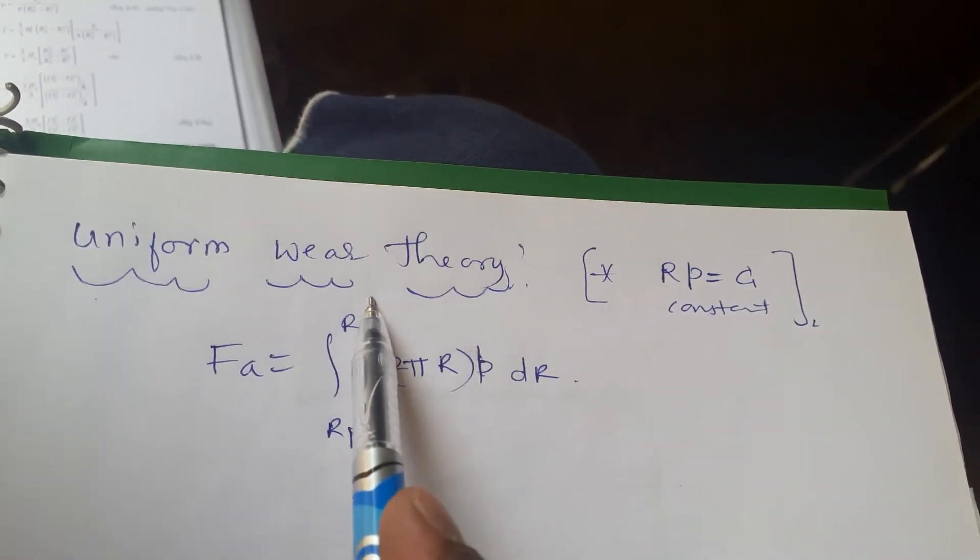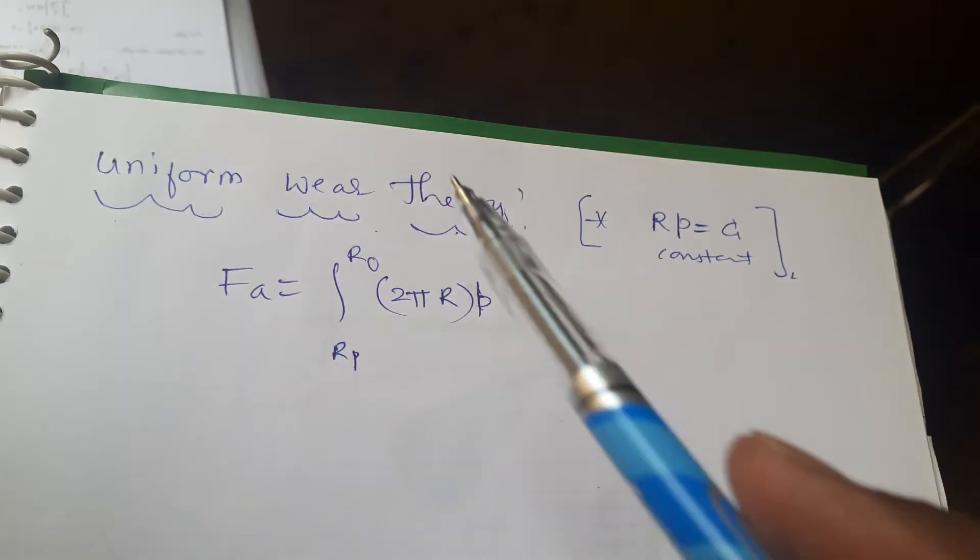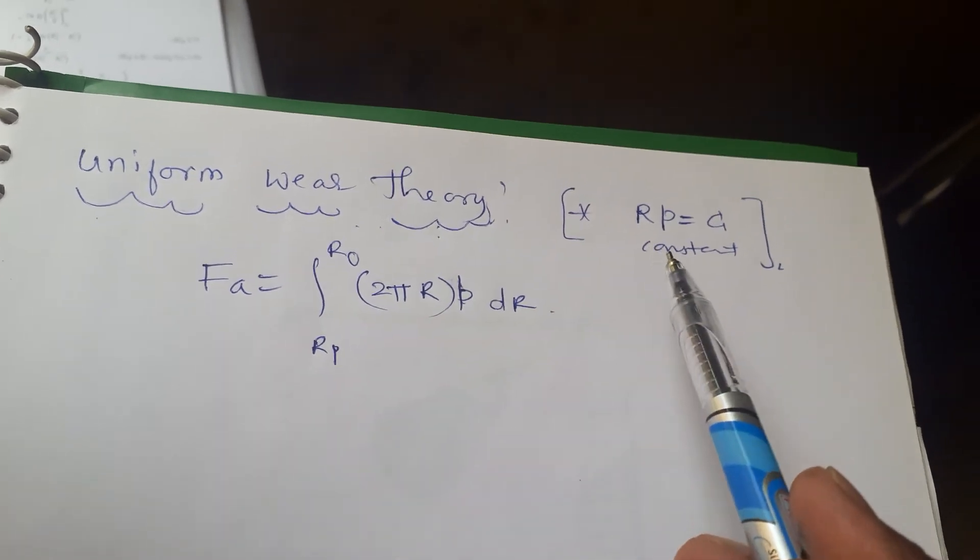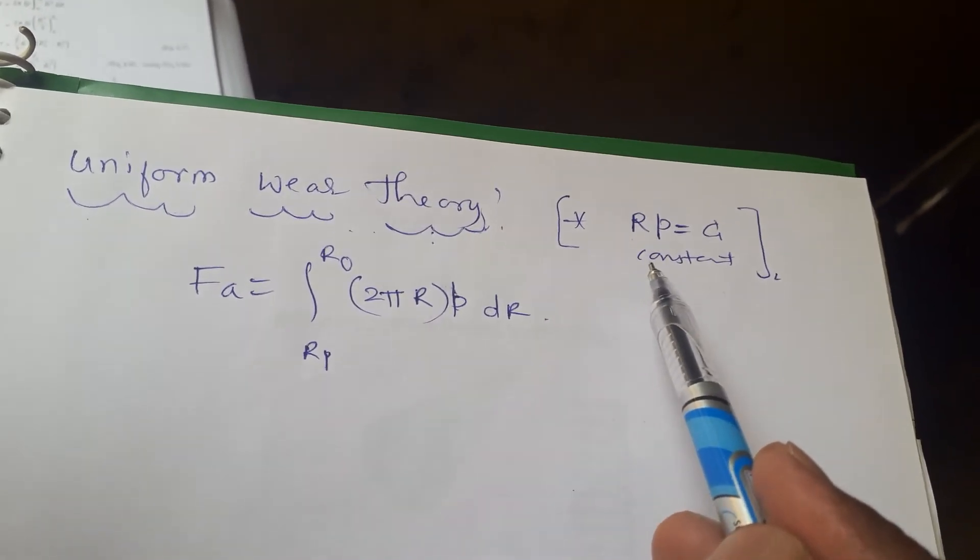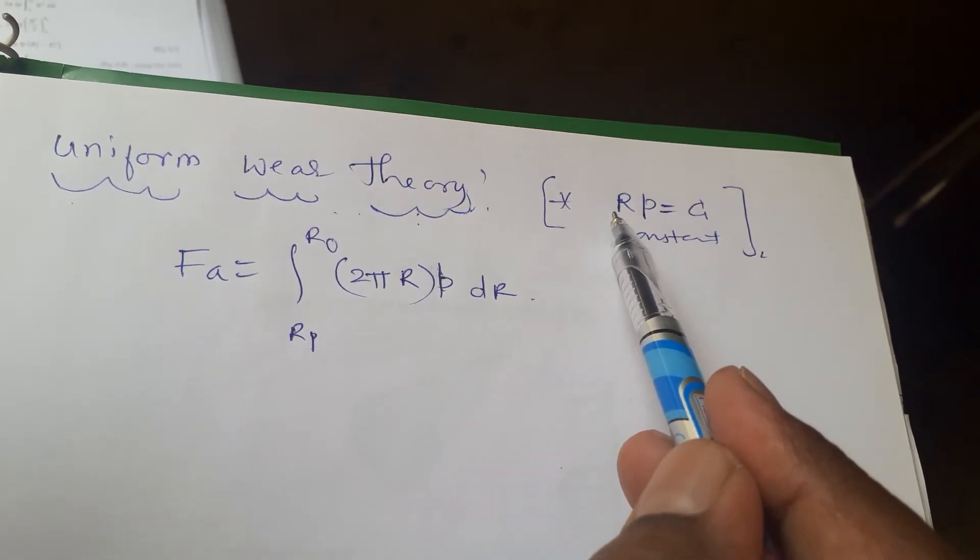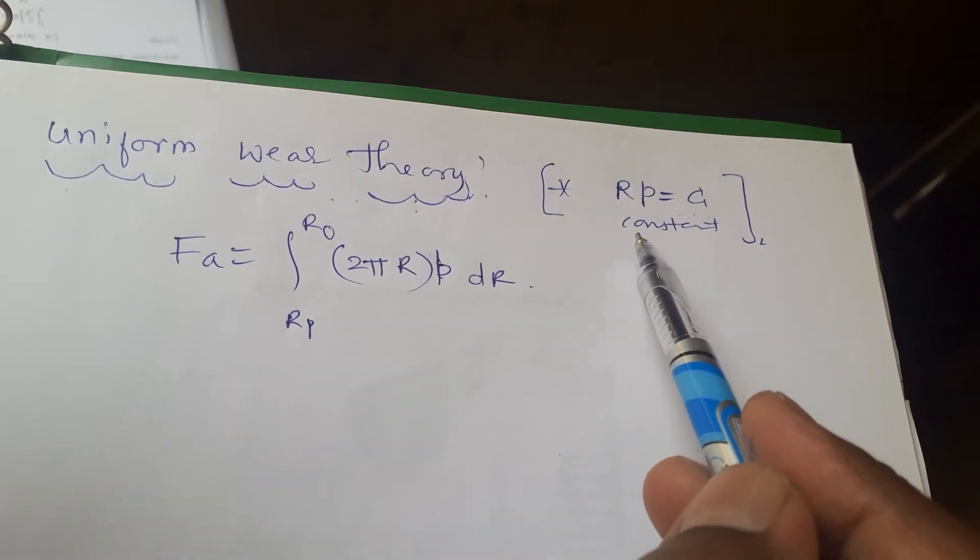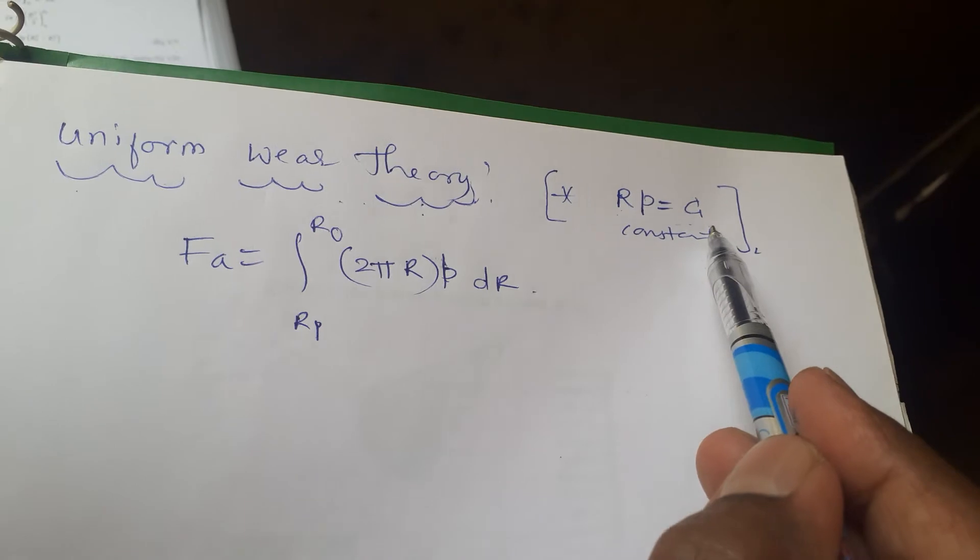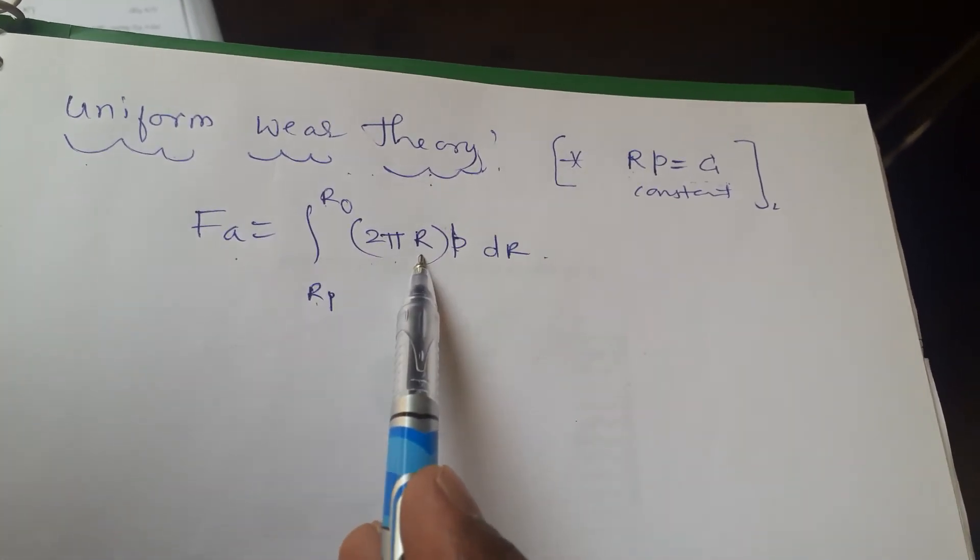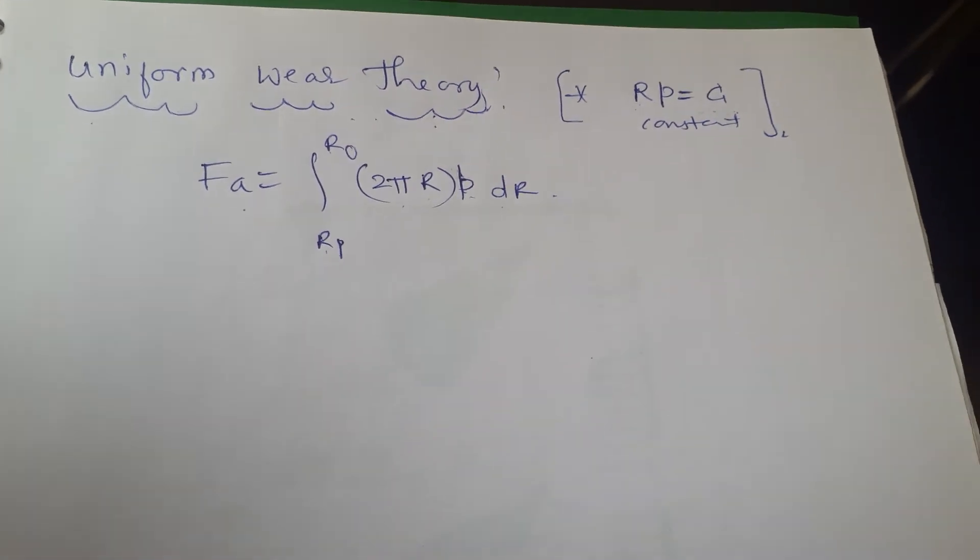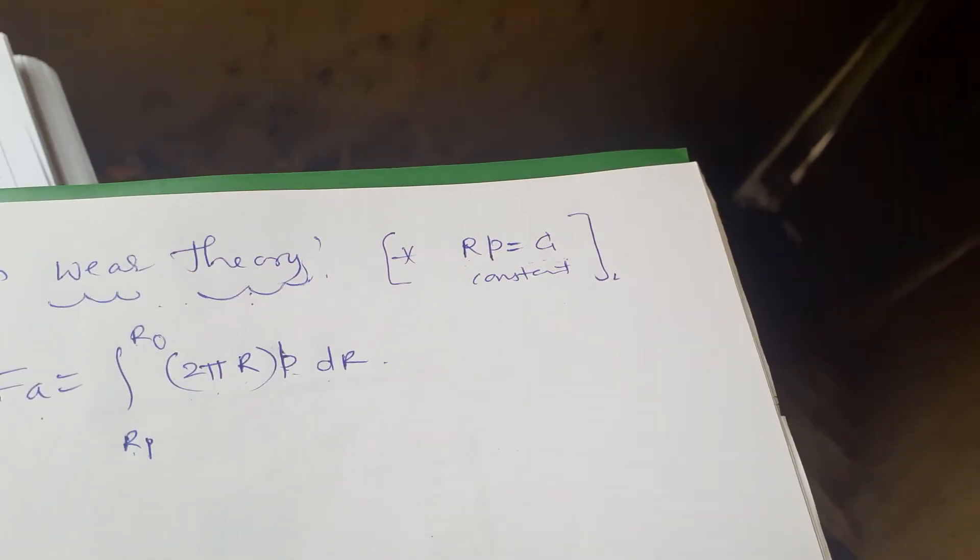The next one is uniform VR theory. As we consider it is a uniform VR theory, so the radius into pressure, the pressure is completely distributed over the radius is constant. That is we can say RP is equals to constant. So what is FA?